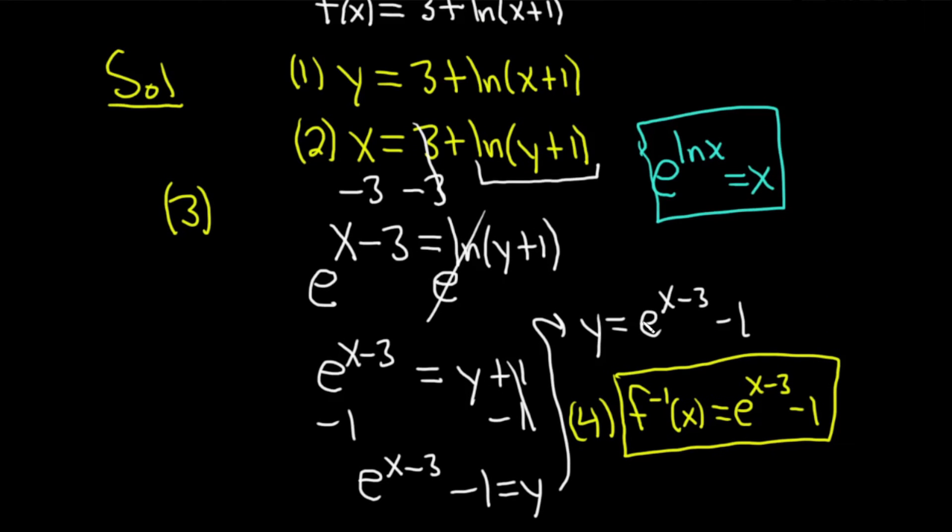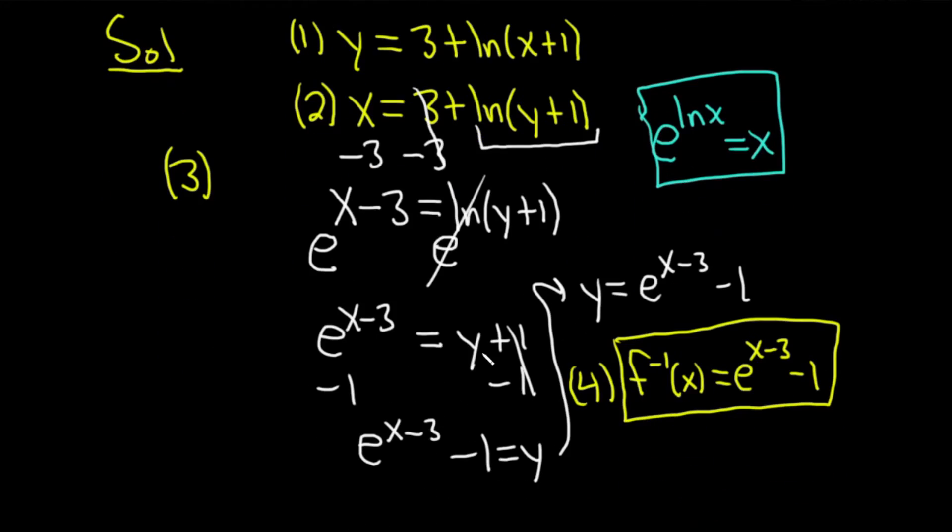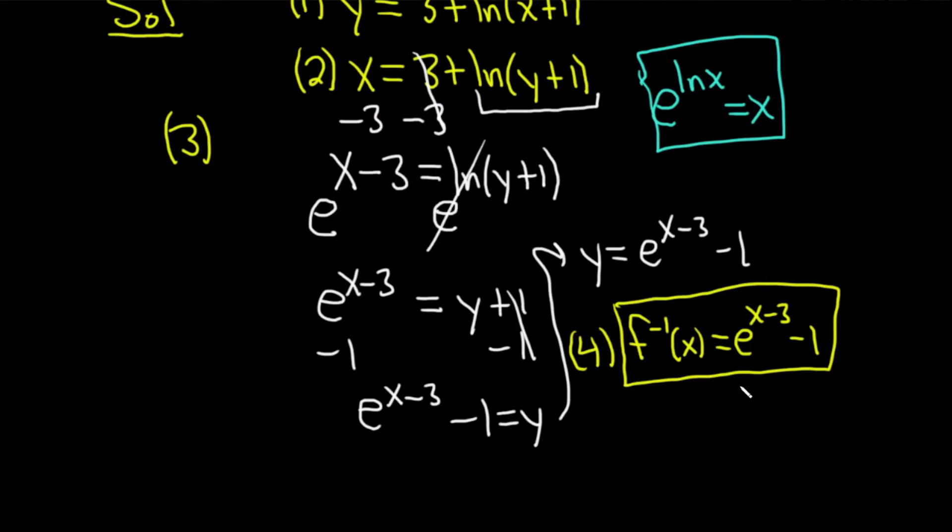So quick recap of how to do this problem. You start by replacing your f(x) with y. You just call it y. Then you switch your x and y. That's pretty easy. And then you actually have to solve for y. And that's the part that usually takes a little bit of work.